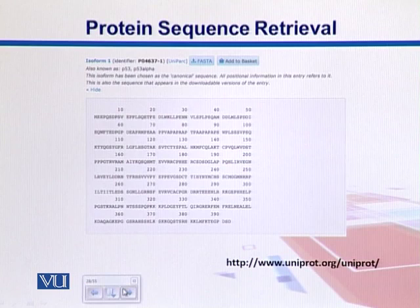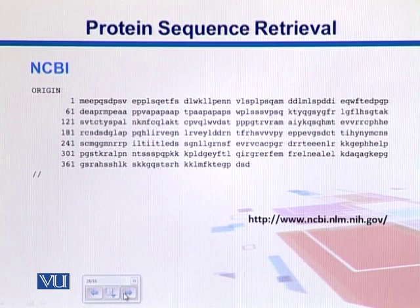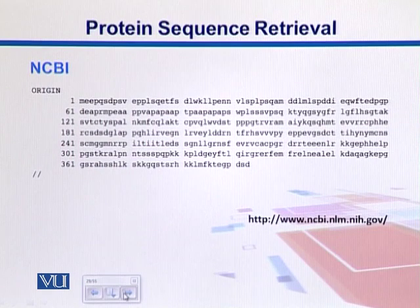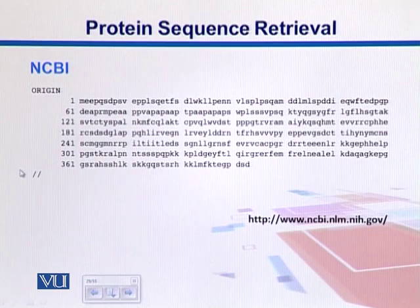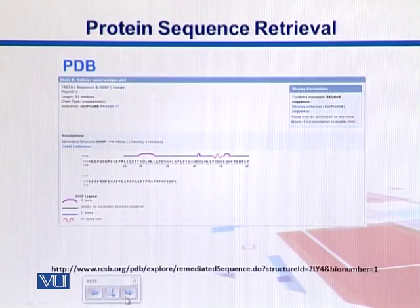You can click the FASTA button at the top to get the output in FASTA format, which we will look into in a few sections. We can also get the same protein from NCBI, where the sequence is very similar but the arrangement is slightly different — it says 'ORIGIN' where the sequence starts, and the sequence ends at two forward slashes.